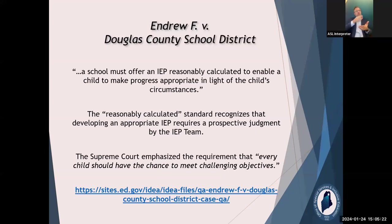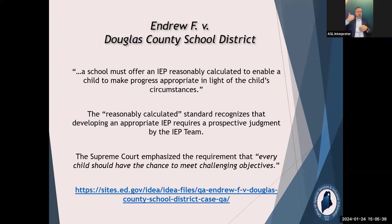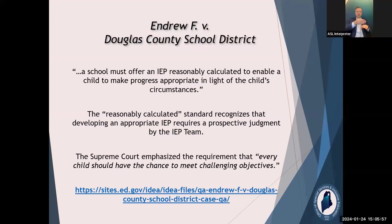His parents filed due process to get reimbursed for the tuition. Prior to this case, the precedent was Rowley, which said any progress is progress — merely more than de minimis counts. Based on that, the hearing officer found in favor of the school district because any progress, any little bit, is sufficient. They appealed to the district court and circuit court, and both agreed with the hearing officer based on precedent that merely more than de minimis is just fine. So they appealed all the way to the Supreme Court, and the Supreme Court had different ideas.